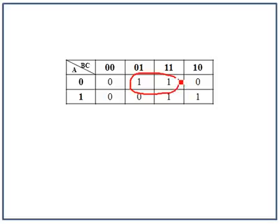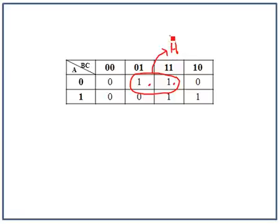Here's a group of 2. What's the equation for this group? A is 0 and C is 1 — that's what is common between the cells here. The similarity between those two cells is that A is 0 and C is 1. So we write that as A-bar, because whenever it's a 0 we write the variable with a bar, and C.